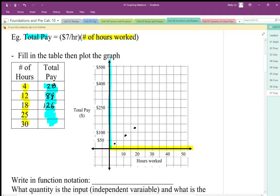So continuing on here, 25 hours times $7 an hour, that's going to be $175. So at 25 hours, I'm going to go all the way up to $175. Again, it seems to fit our pattern.